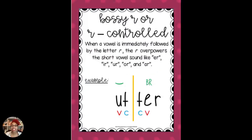The next syllable type is bossy R, or R-controlled syllables. This is simply when a vowel is immediately followed by the letter R. The R is so bossy that it overpowers the short vowel sound — such as in the word 'utter,' where that E is overpowered by the R, making it say the 'ur' sound.